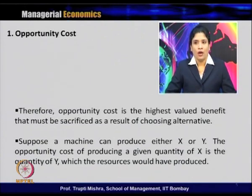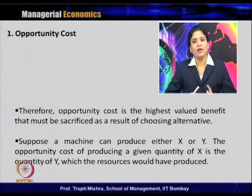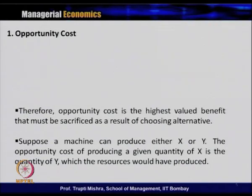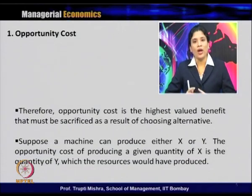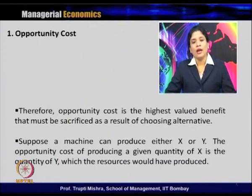Consider an example: suppose a machine can produce either X or Y. With the available resources, either they can produce X or they can produce Y. The opportunity cost of producing a given quantity of X is the quantity of Y which those resources would have produced, because resources are fixed. When evaluating the opportunity cost of X, it is always in terms of Y; and the opportunity cost of Y is always in terms of X.